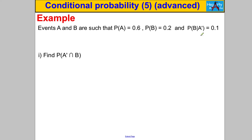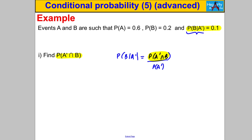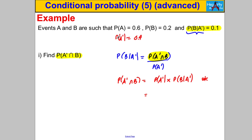Question 6: find P(not A ∩ B) given P(B|not A) and P(A) = 0.6. Using P(B|not A) = P(not A ∩ B) / P(not A), rearranged: P(not A ∩ B) = P(not A) × P(B|not A). P(not A) = 1 − 0.6 = 0.4, so: 0.4 × 0.1 = 0.04.